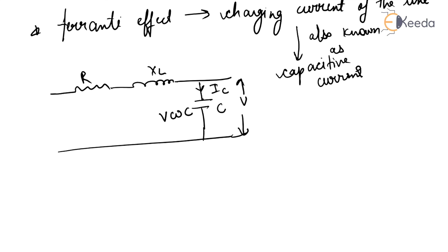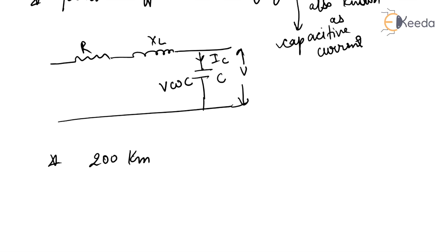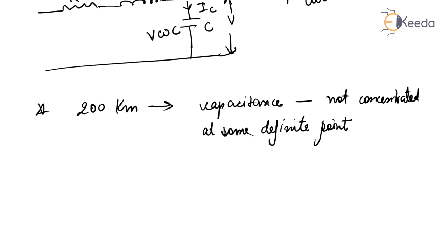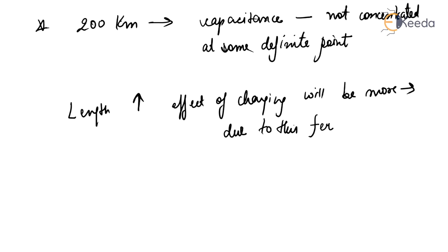The Ferranti Effect occurs because capacitance and inductance are the main parameters of the line, for lines of 200 km and above. The capacitance is not concentrated at a single definite point; it is distributed uniformly along the whole length. When capacitors are connected in parallel, the total capacitance C equals the capacitance per unit length times the total length. As the length increases, the effect of charging current becomes greater.